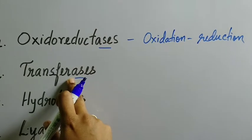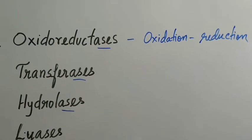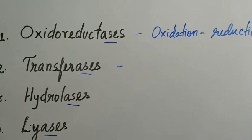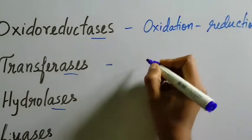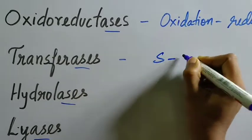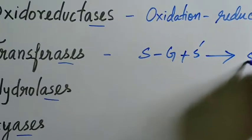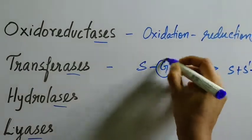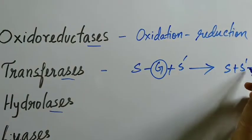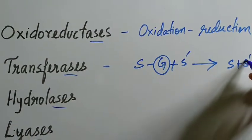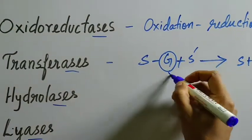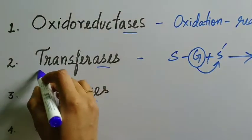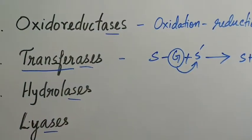Transferases are those enzymes which are involved in reactions wherein transfer of a functional group is taking place. For example, as given in your textbook, two reactants are there. In one of them, G is supposedly the functional group. As the reaction culminates, G is now part of the other substrate. There is a transfer of functional group taking place. So the enzyme involved in such kind of reactions is called a transferase.